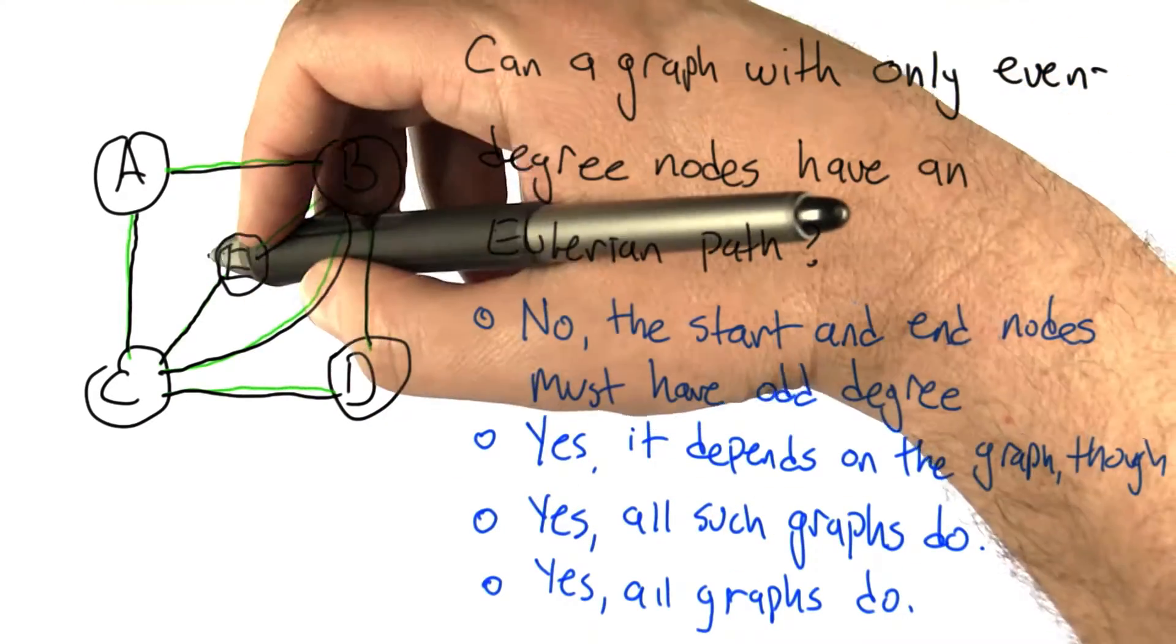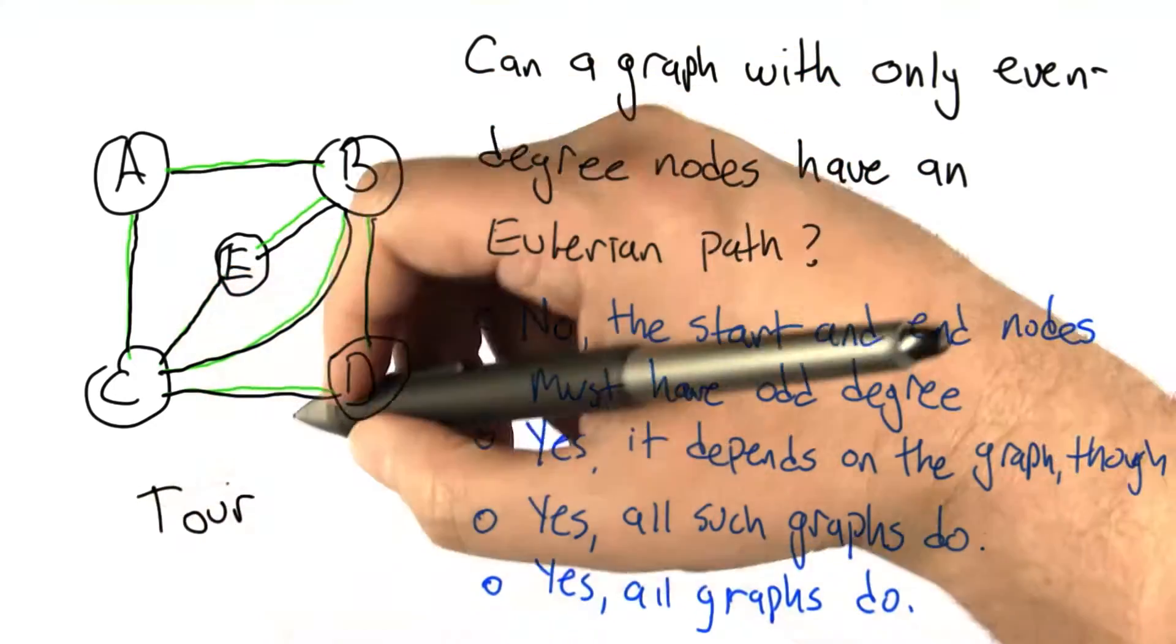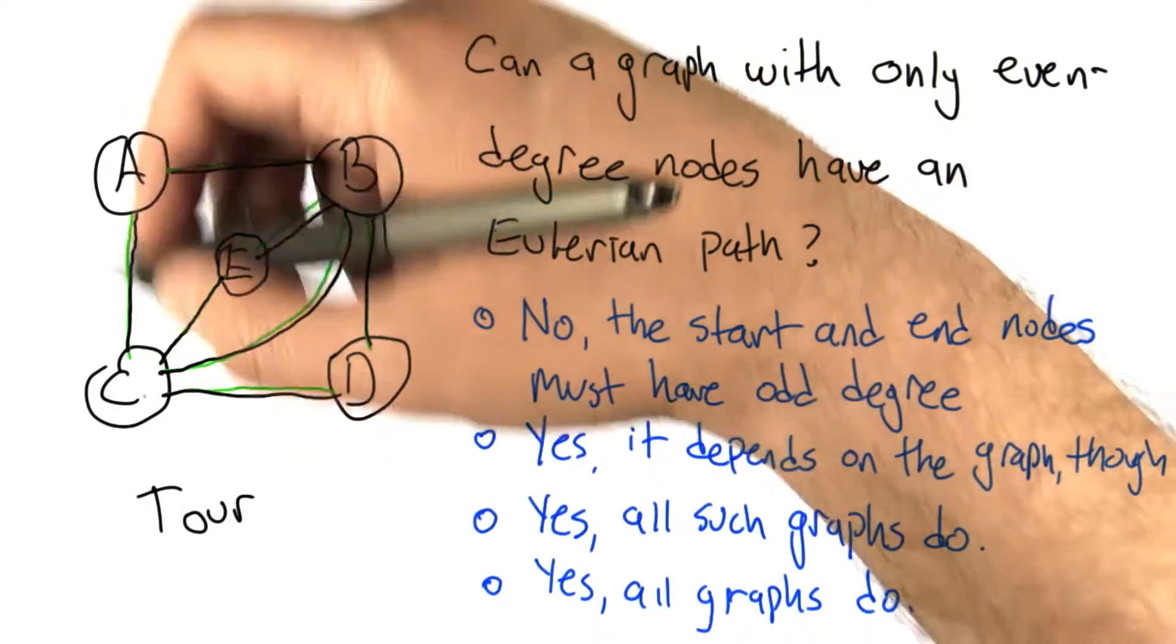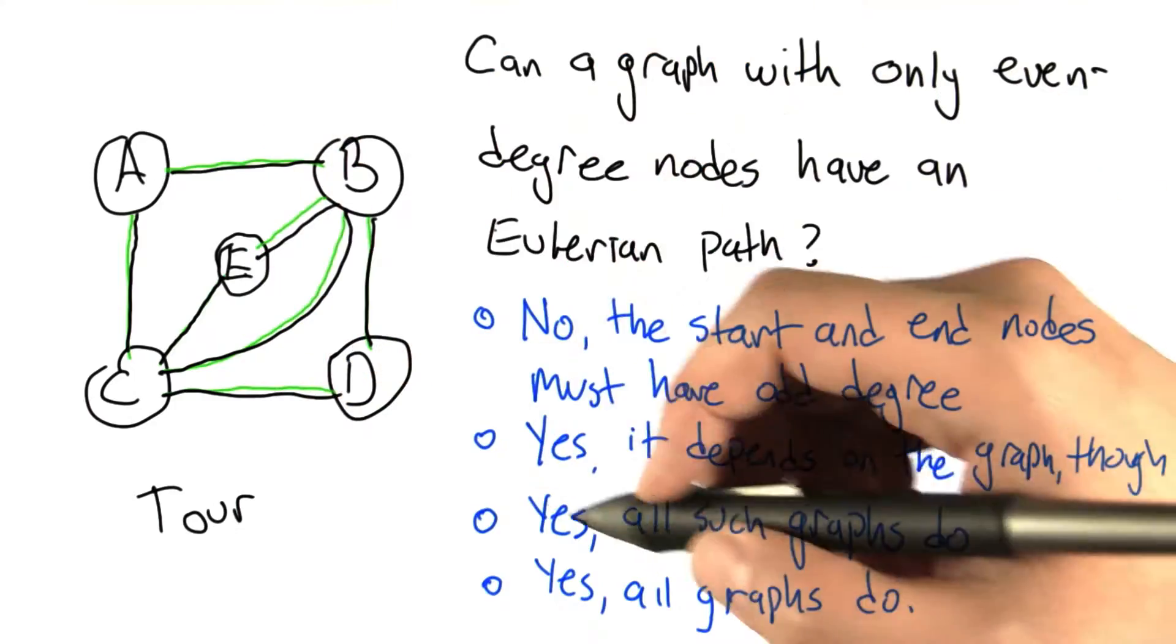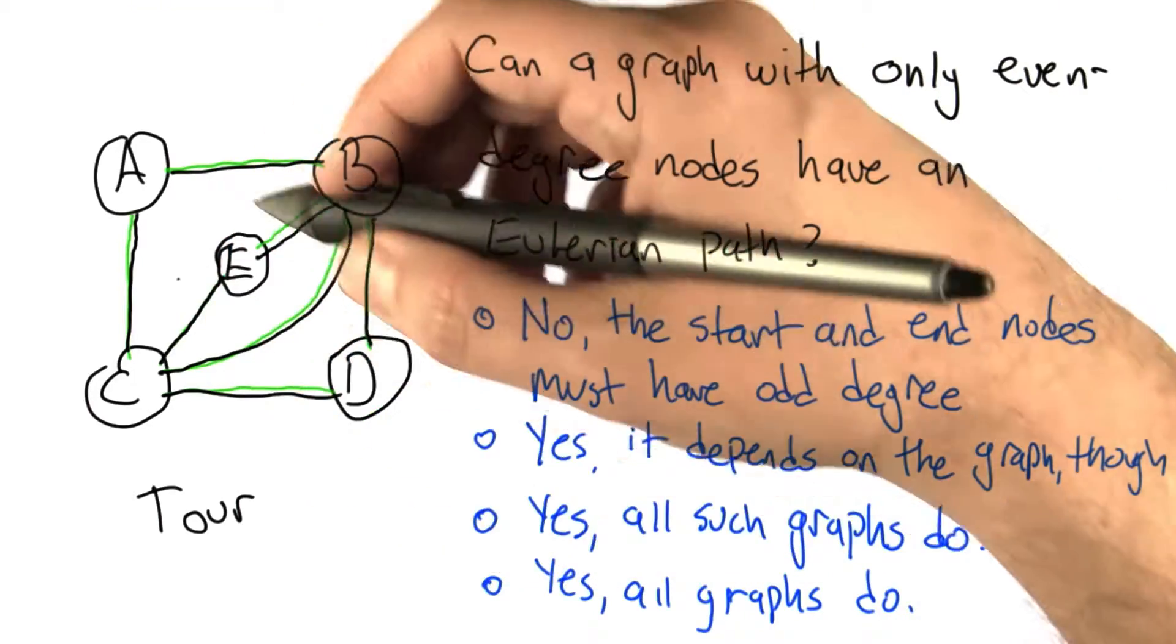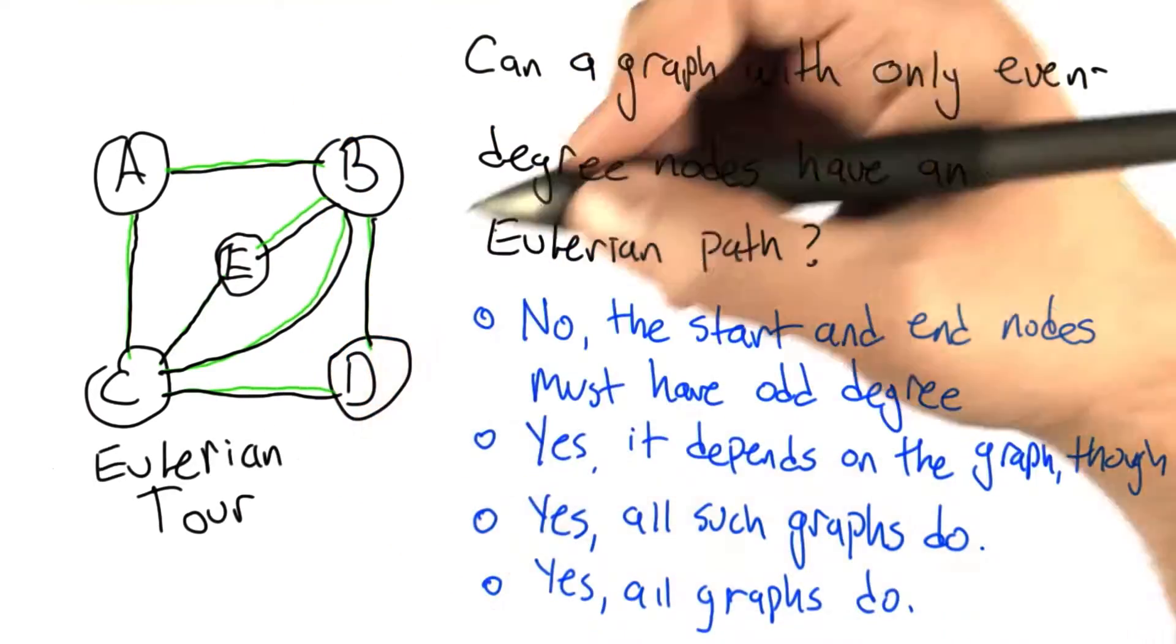This is a special kind of Eulerian path called an Eulerian tour. It's a tour in the sense that we start off in our home city, and we go around, we visit lots of things, and we come back to our home city. So we kind of did a tour of the graph, and it was very scenic. So that's an Eulerian tour.